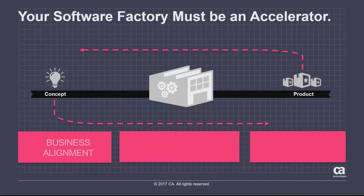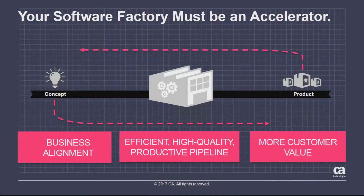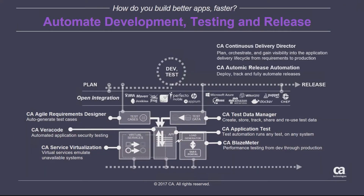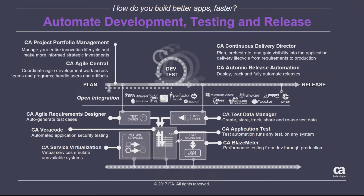As part of the modern software factory, the goal is to take those concepts and ideas and translate them into a product you can deliver to your customers that adds value. Using the CA toolset we can deliver that. Looking at this diagram, in the top left hand corner we take those ideas into CA Project Portfolio Manager where we do our financial planning, they're fed into Agile Central, and that drives our continuous pipeline.